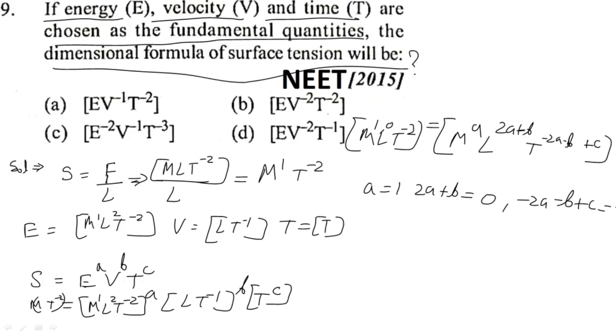Now solving all three equations, we would have a as 1, b as minus 2, and c as minus 2. So for that we can write the dimension of S would be E¹ V⁻² T⁻².